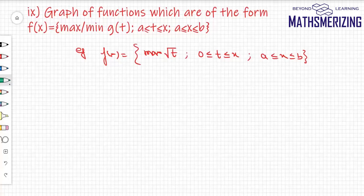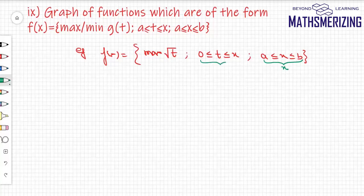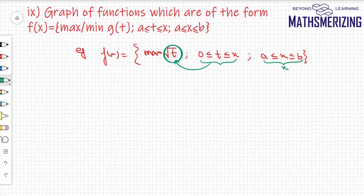The function f(x) is defined as the maximum of √t when t lies between 0 and x, and x lies between a and b. This simply means that at any point x between a and b, t can take any value between 0 and x, and in this interval we find the maximum value of √t, which is then assigned to f(x).